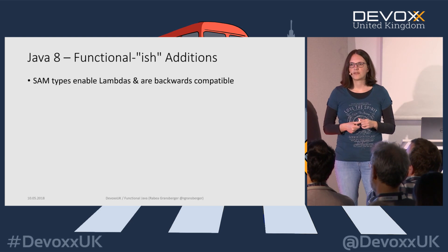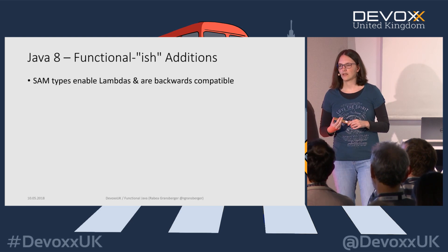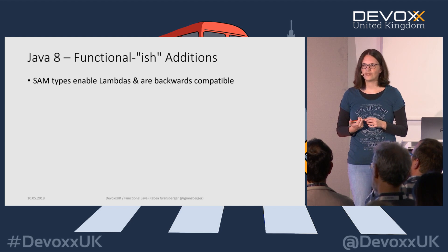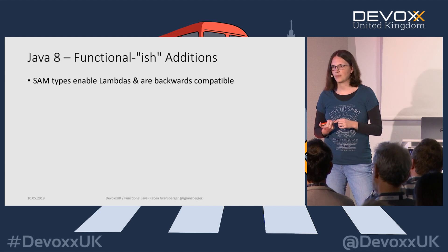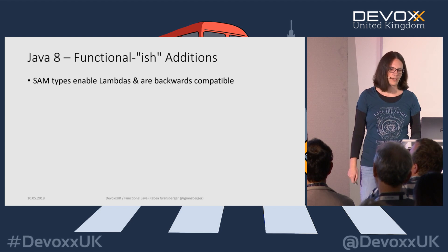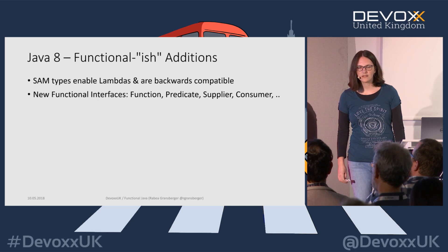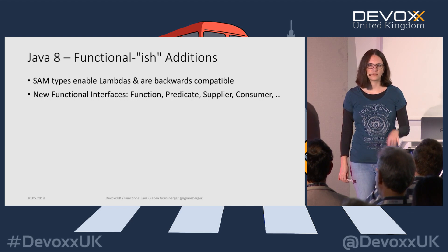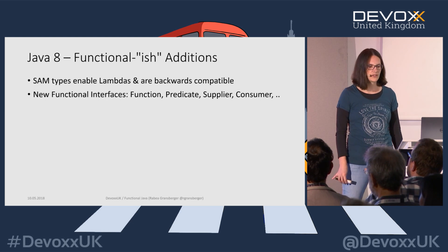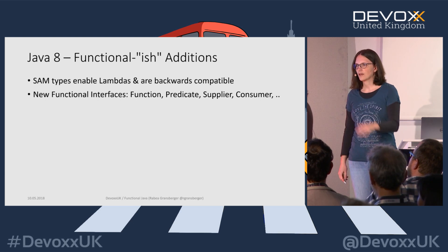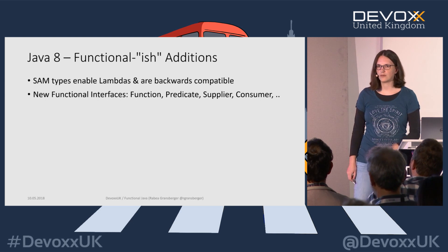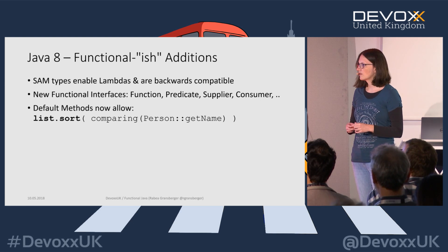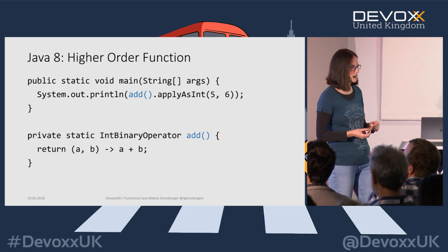Other functional-style additions: we now have single abstract method (SAM) types — for every interface or class with only a single abstract method, we can use lambdas. It still compiles back to types for backwards compatibility but it feels like we have proper lambdas. We have new functional interfaces with the `@FunctionalInterface` annotation so the compiler ensures only one abstract method exists, while still allowing default methods. We have `Function`, `Predicate`, `Supplier`, `Consumer`, `BiFunction`, and more as basic building blocks.